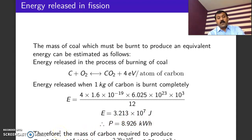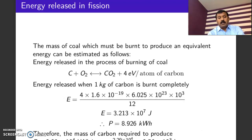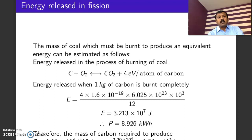Therefore, the mass of carbon required to produce the same amount of energy as the fission of 1 gram of uranium — which is 2.29 × 10⁴ kilowatt-hours — is 2.29 × 10⁴ divided by 8.926, which equals about 2.56 × 10³ kg. That means approximately two and a half thousand kilograms of coal is required to produce the same amount of energy that 1 gram of uranium produces when it undergoes fission.